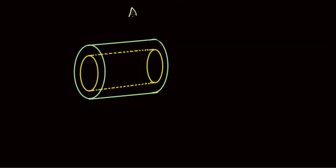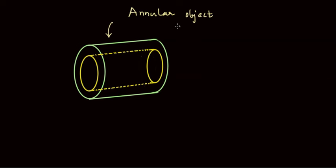Let us look at how we can find out the volume of an annular object, like a cylinder that you can see here. An annular object is a hollow object but there is some thickness to it, and what we are interested in finding out is the volume of the thick part.